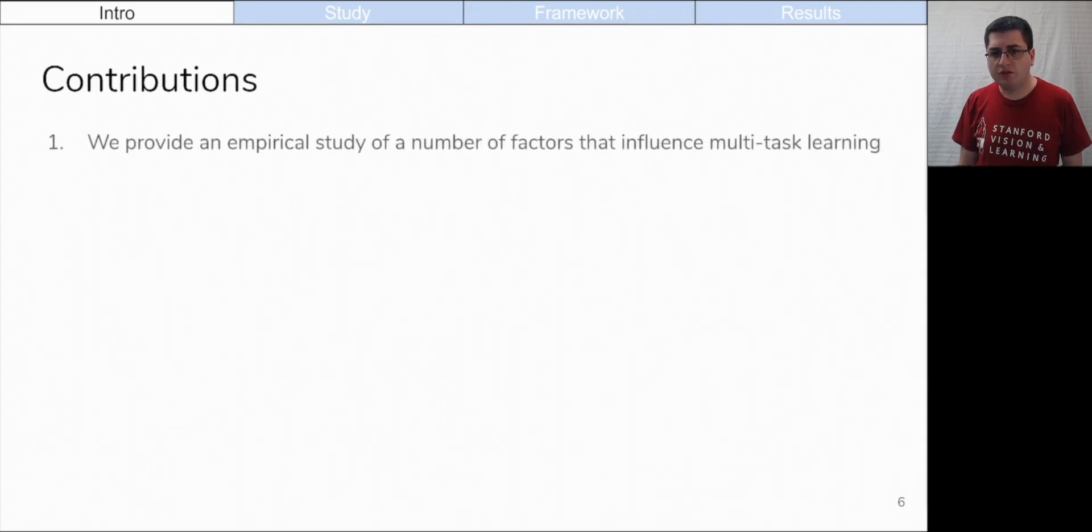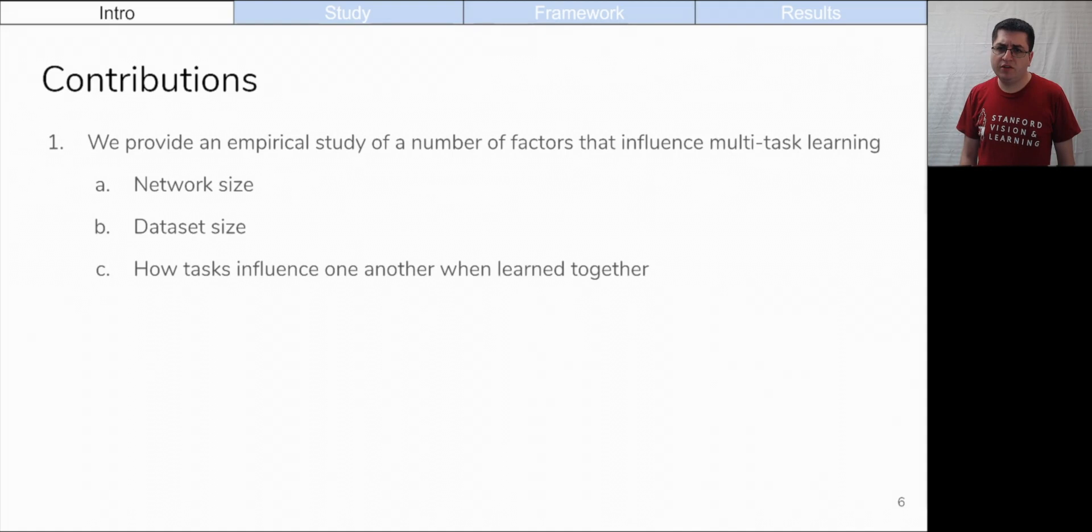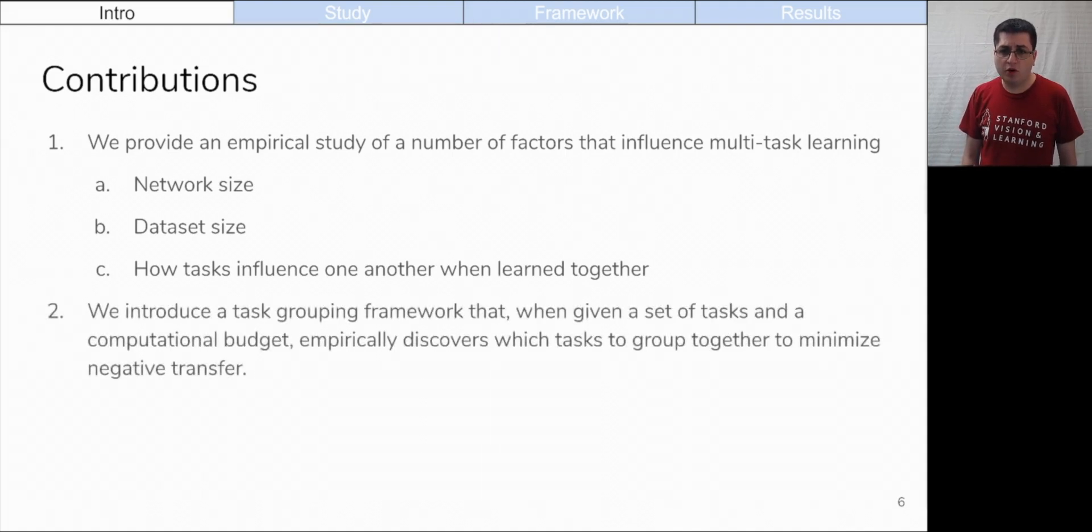We provide an empirical study of a number of factors that influence multi-task learning such as network size, data set size, and most importantly, the influence tasks have on one another when learned together. Furthermore, we design an empirical task grouping framework for choosing which tasks to learn together and which tasks to learn separately to achieve the highest prediction accuracy with multiple neural networks subject to an inference time budget. Having a fixed amount of time allotted for inference functions is common in robotics tasks such as autonomous driving.